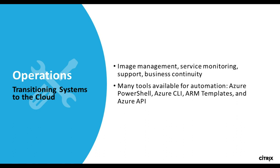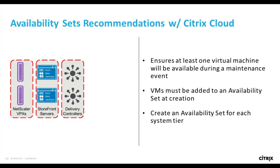Starting with operations — we're talking about deployment models we have in Azure. PowerShell is more of an iterative approach to deploying resources, while Azure CLI is more declarative, where you don't have to know the exact order of operations for configuring resources. We also have ARM templates, which allow you to take all your resources and define them as a single template, plus the Azure API. On the Citrix side, we have image management and service monitoring, while on the Azure side we have the install, manage, and config layer. Business continuity includes disaster recovery as a service options.